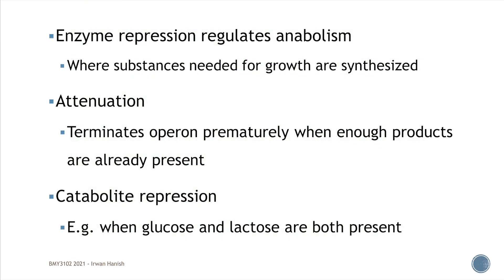The opposite of enzyme induction is enzyme repression, which usually regulates anabolism — substances microorganisms need to grow. The classic example is the tryptophan operon, or tryp operon. In the lac operon, lactose binding to the repressor protein deactivates it. In the tryp operon it's the other way around: when tryptophan binds to the repressor protein, it activates it. So when there's too much tryptophan, the repressor protein blocks tryptophan synthesis. Additionally, there's a mechanism called attenuation, where the tryp operon can start but stops prematurely without finishing enzyme synthesis.